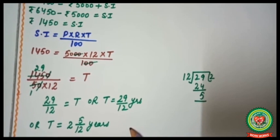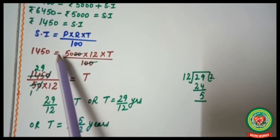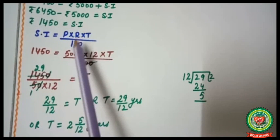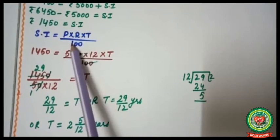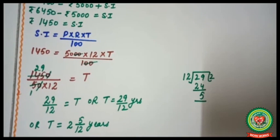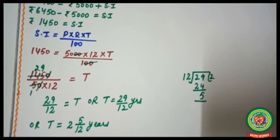By doing all these examples, you have learned how to find the principal, rate, and time by applying the simple formula: Simple Interest = P × R × T / 100. I hope all of you have understood these examples completely and are now able to do the related homework sent in your Snap Homework. Thank you.